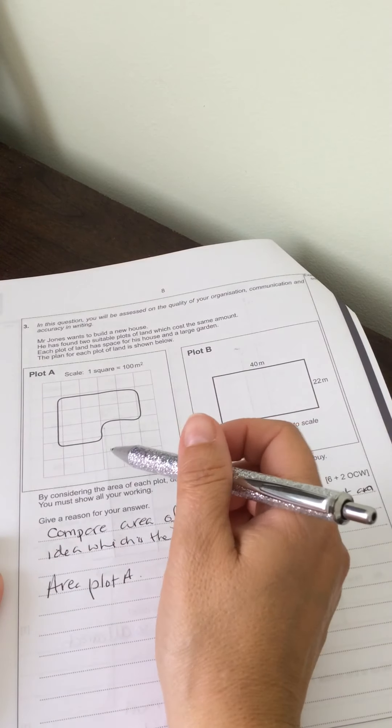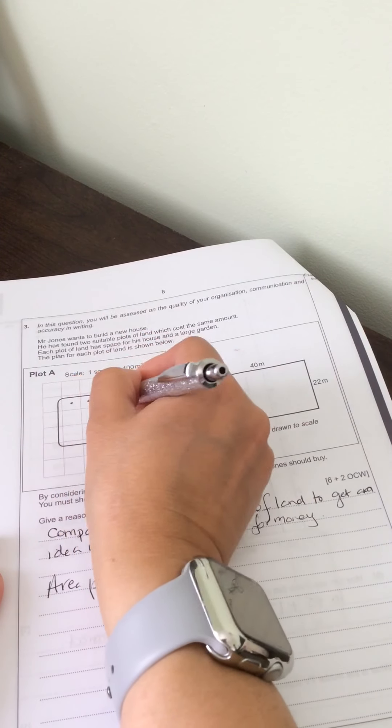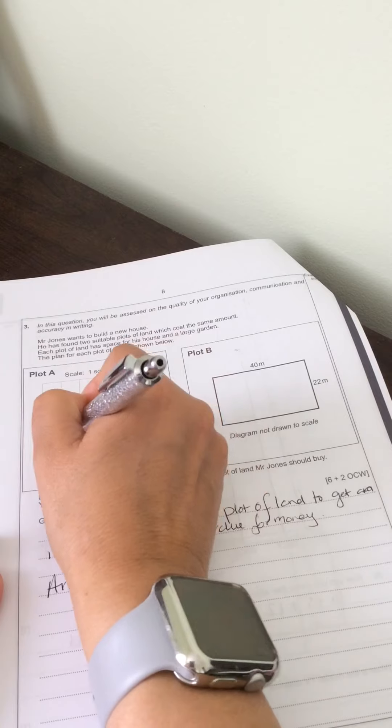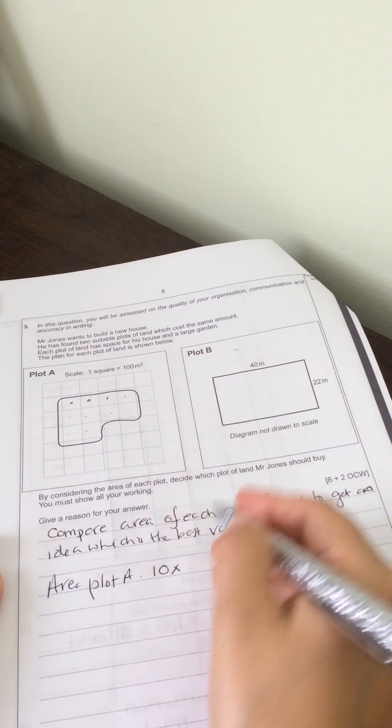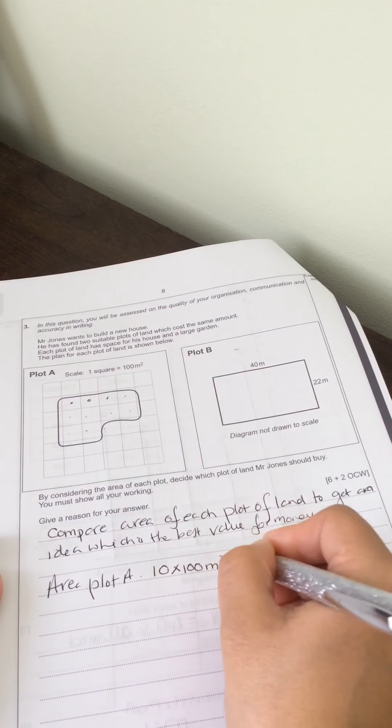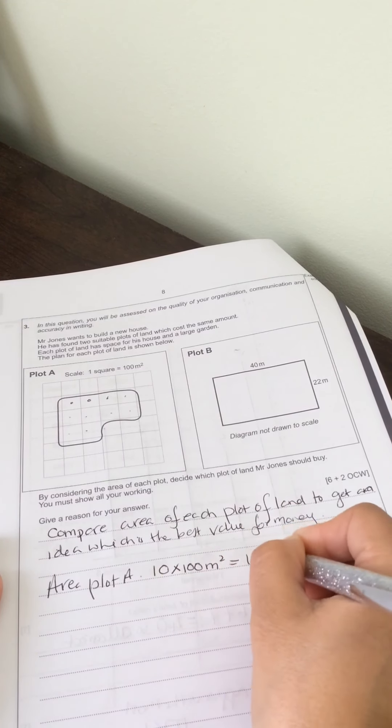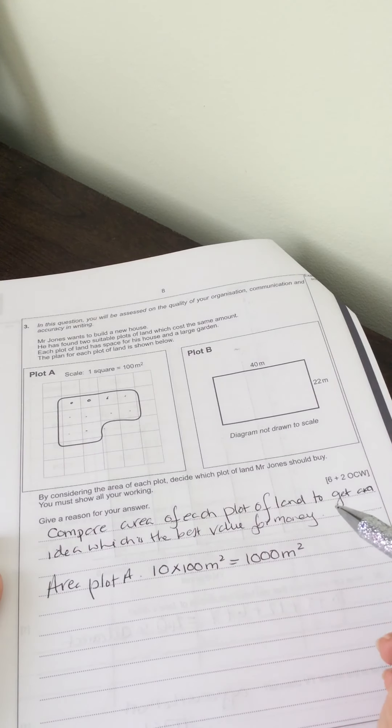Now we're told, so we're going to estimate, so there's 1, 2, 3, 4, 5, 6, 7, 8, 9, 10. 10 full squares with 100 metres squared in each. So that means there are 1,000 metres squared, that's the area for plot A.